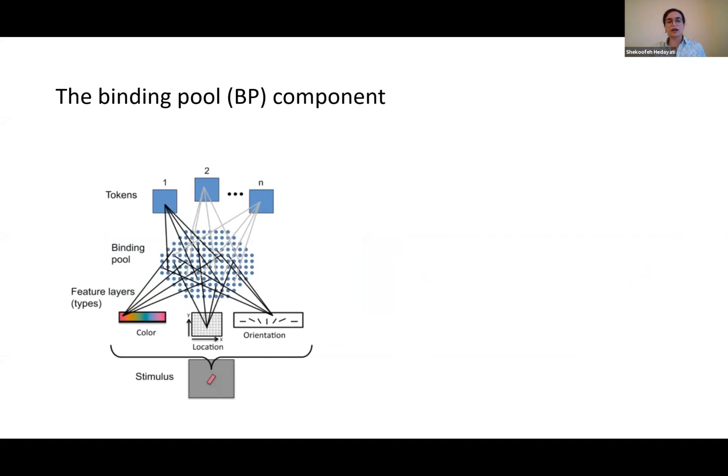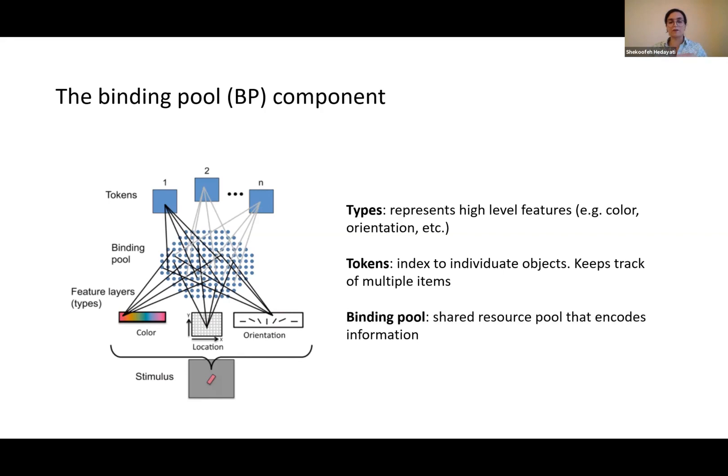The binding pool component has a type layer that represents high-level features. For example, for this oriented bar, it has color, location, and orientation represented in the type layer. There is a token that indexes and individuates objects and can keep track of multiple items. Without tokens, we cannot store more than one item or retrieve more than one item in the binding pool. The binding pool layer is the shared resource pool that encodes the information.